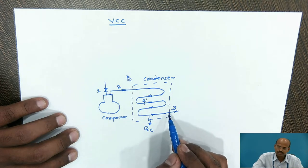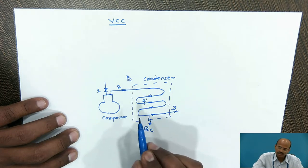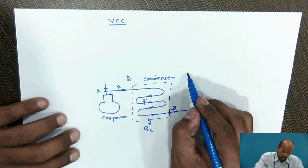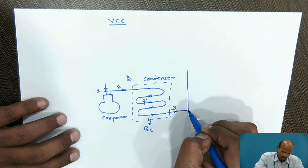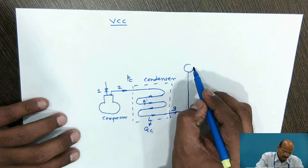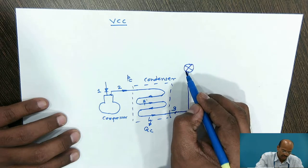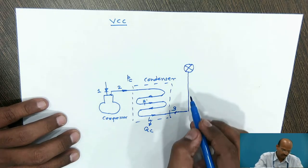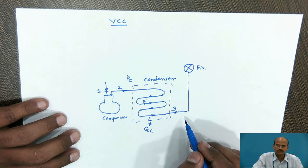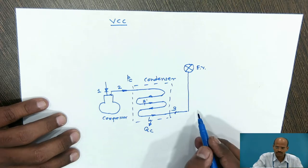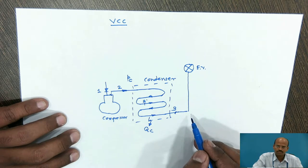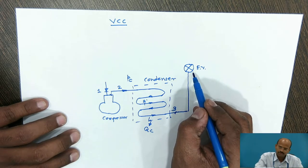The pressure possessed by this refrigerant is high and must be reduced to the designed evaporator temperature. That is why we require an expansion valve. There are different types of expansion valves: the first is the simple capillary tube, second is the thermostatic expansion valve, automatic expansion valve, internally equalized expansion valve, and externally equalized expansion valve.